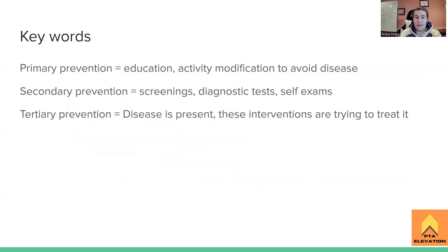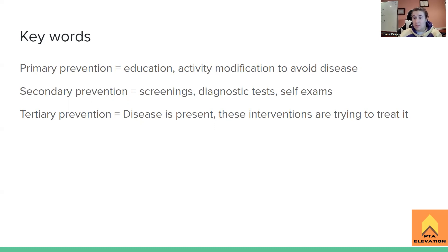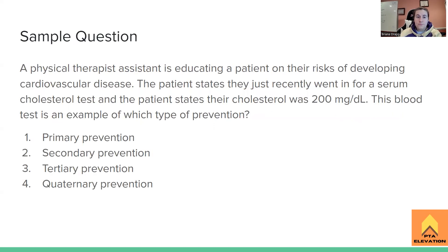To summarize: primary prevention is education, activity modification, and avoiding the disease in the first place. Secondary prevention is screenings, diagnostic tests, and self-exams to identify the problem early. Tertiary prevention is when the disease is already present — these are the interventions used to treat the disease, reduce its impact on the body, or improve the patient's quality of life.